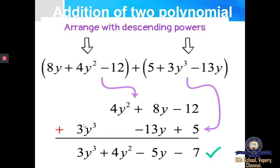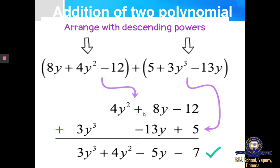The powers have to be combined exactly with the same power. If there is a cube term it should be written with the cube term; if there is a square term it should be written with the square term. Over here there is a Y term, so I have written minus 13Y beside it, then plus 5 is a constant written beside the constant. So 0 plus 3Y cube gives me 3Y cube only. 4Y square plus 0 gives me 4Y square only. For 8Y and minus 13Y there are different signs, so you are supposed to subtract and then write the sign of the greater number — 13 minus 8 is 5, and since 13 has the negative symbol the answer is minus 5Y.